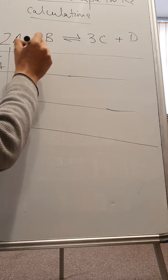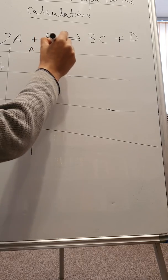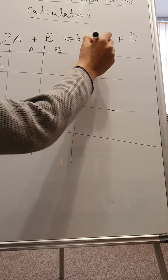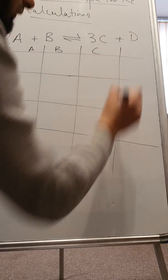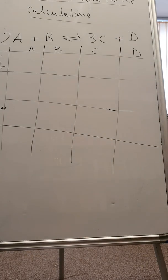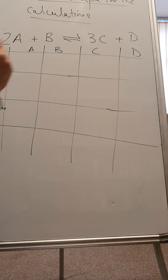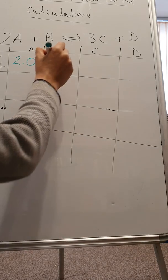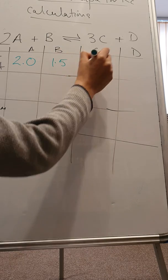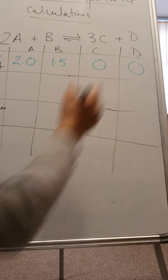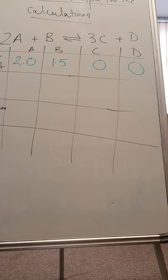We've got a column for A, a column for B, a column for C, and a column for D. What did I start with? We have 2 moles of A to start with and 1.5 moles of B, nothing of C, nothing of D. That's what we're starting with.